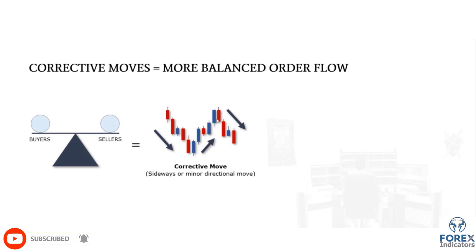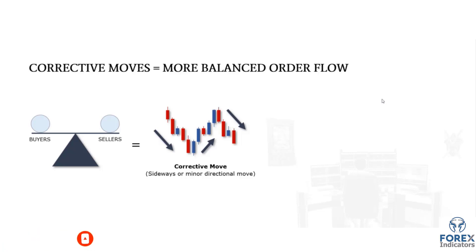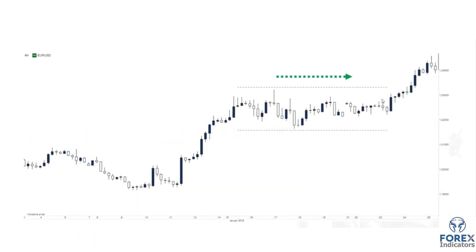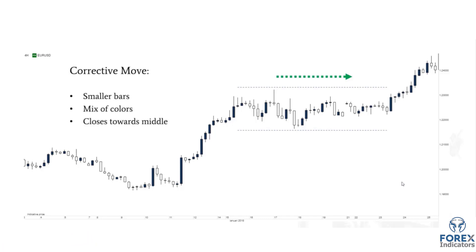Corrective moves show a big mix of bullish and bearish candles, representing an equilibrium between buyers and sellers. These tend to create sideways, non-directional price movement — neither bullish nor bearish, with an equal balance between buyers and sellers, making a sustained single direction less likely. On the same chart, after the bullish impulsive move, we enter a corrective phase with a mix of bullish and bearish candles, closes near the middle, and smaller candles — a textbook impulsive and corrective pattern.